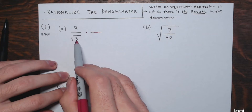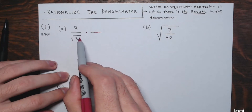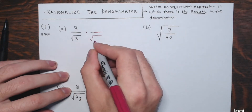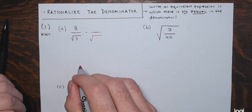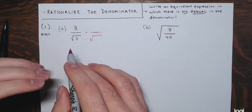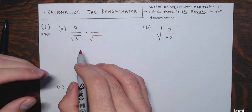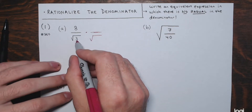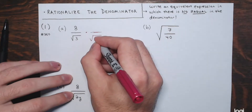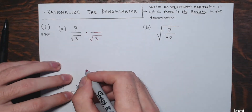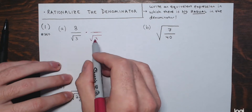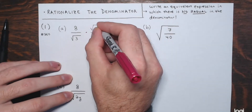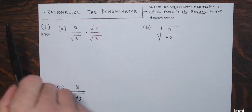The denominator has the square root of 3, which is 3 to the first power. I want to multiply by another square root so that we end up with the square root of a perfect square. For cube roots we'd want perfect cubes, for fourth roots we'd want perfect fourth powers, and so on. We have 3 to the first here, so I just need one more factor of 3 to get 3 squared — a perfect square. So I'm going to multiply both numerator and denominator by the square root of 3.